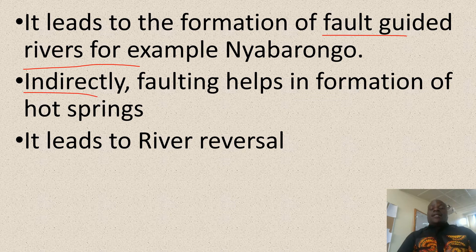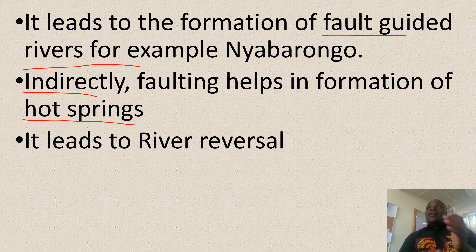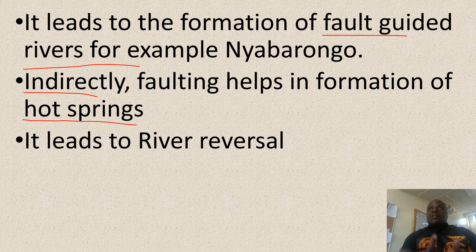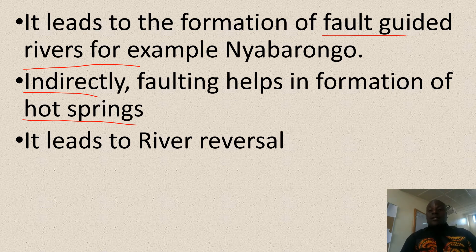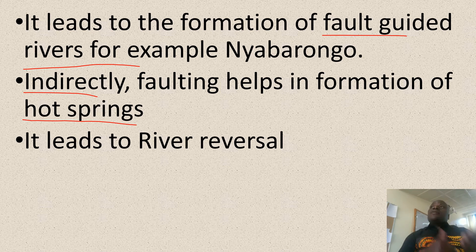Next, indirectly faulting helps in the formation of hot springs, because it is through these cracks within the rocks that water follows these lines of weakness and is extruded on the surface to form a hot spring or a geyser. Without faulting, these cracks would not have been formed, and without these cracks, this water would not have been extruded to form a hot spring.